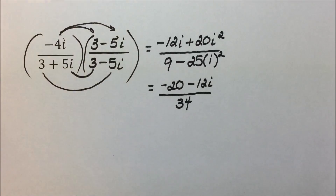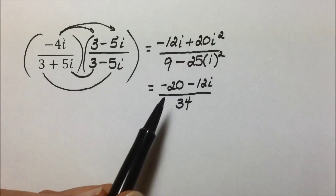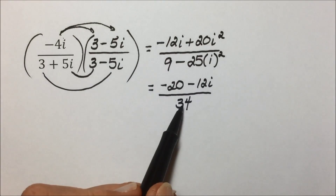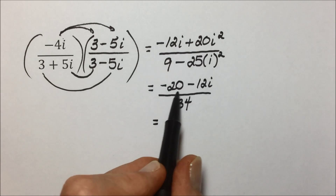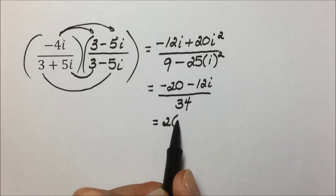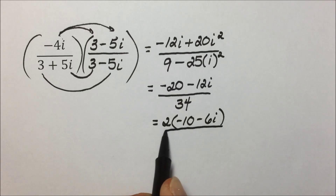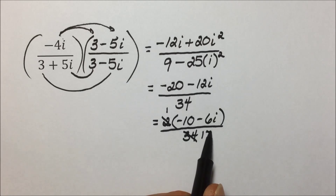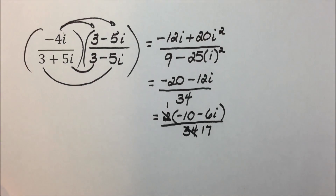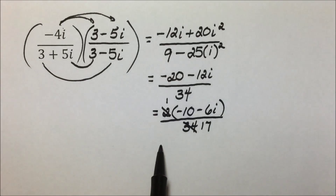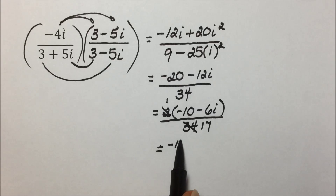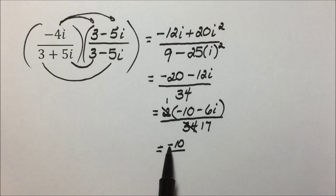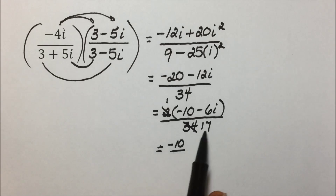We want to express this as a plus bi, but first let's reduce by factoring. Each of these numbers is even, so we can factor out a 2 from the numerator, leaving negative 10 minus 6i. That factor of 2 in the numerator cancels a 2 in the denominator, leaving 17. Now splitting the terms apart, our real portion is negative 10 over 17, and our imaginary portion is 6i over 17, giving us negative 10 over 17 minus 6i over 17.